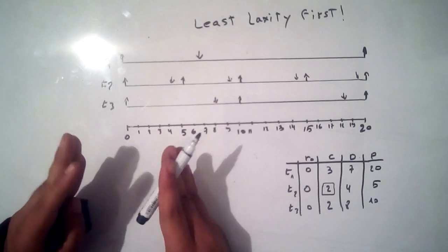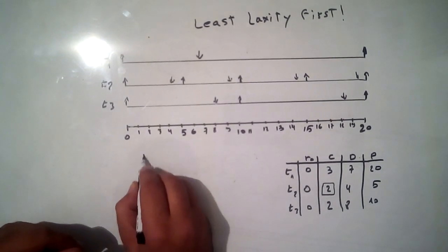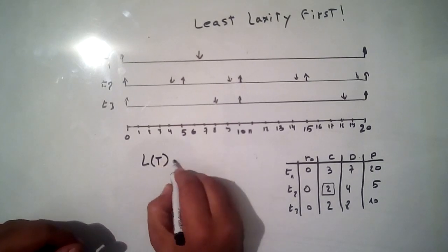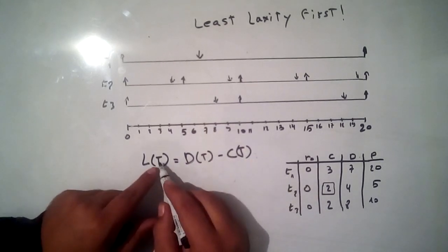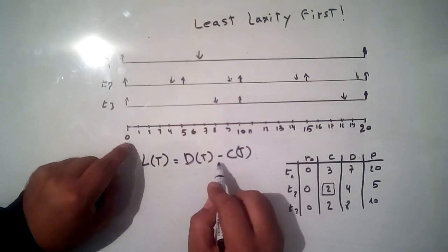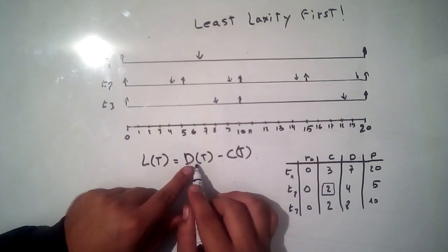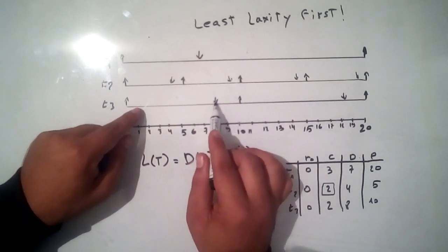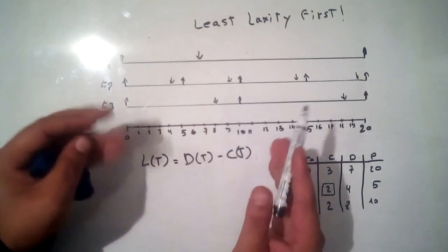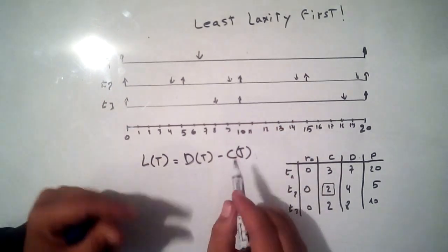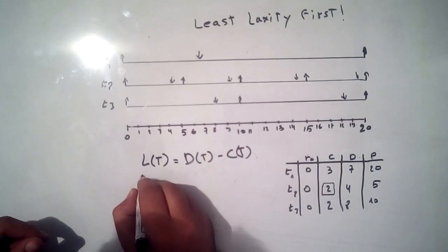To apply the Least Laxity First algorithm, follow this formula: LT = DT minus CT, where T represents the current time. DT is the distance between the nearest deadline and the current time, and CT is the remaining execution time at time T.